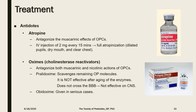Atropine antagonizes the muscarinic effects of organophosphate compounds by acting directly on the post-synaptic receptors of acetylcholine. It is considered the specific antidote for organophosphate toxicity. The patient's response to atropine appears gradually, so IV injection should continue until full atropinization — in the form of dilated pupils, dry mouth, and clearance of bronchial secretions.